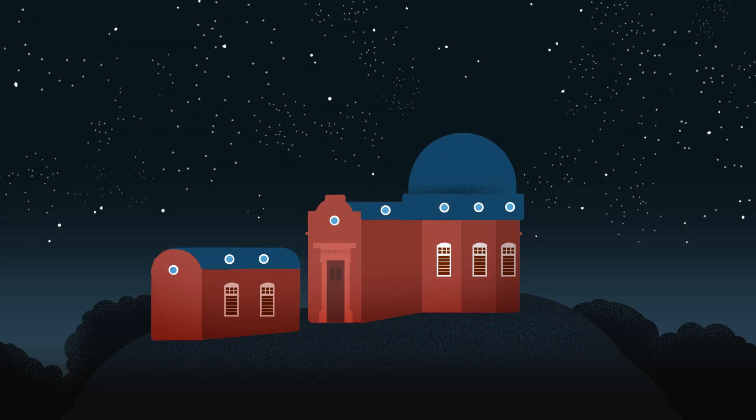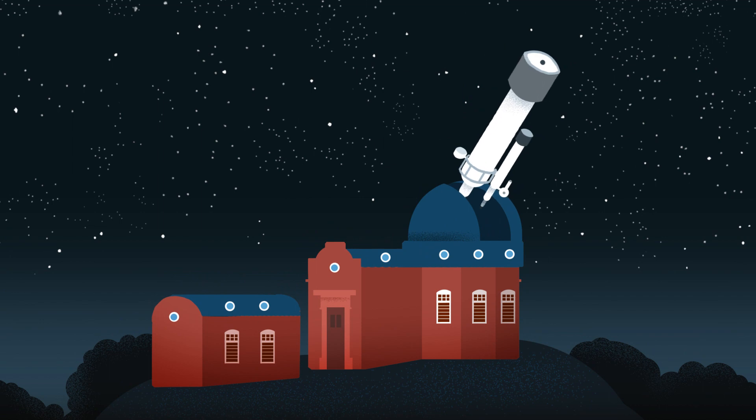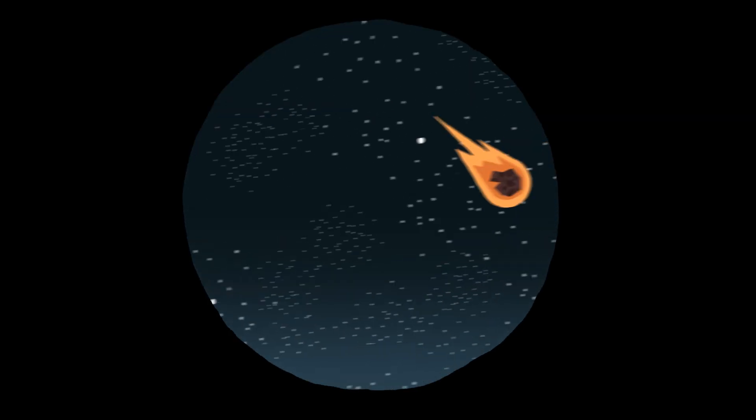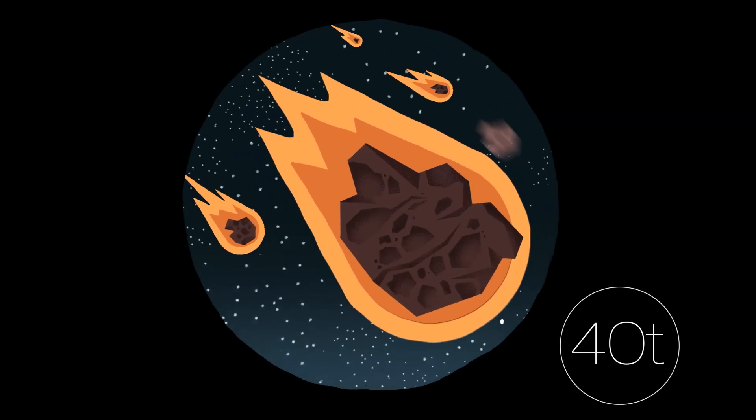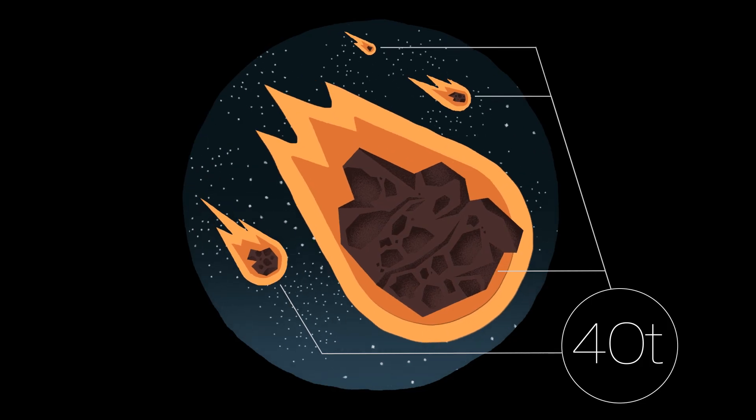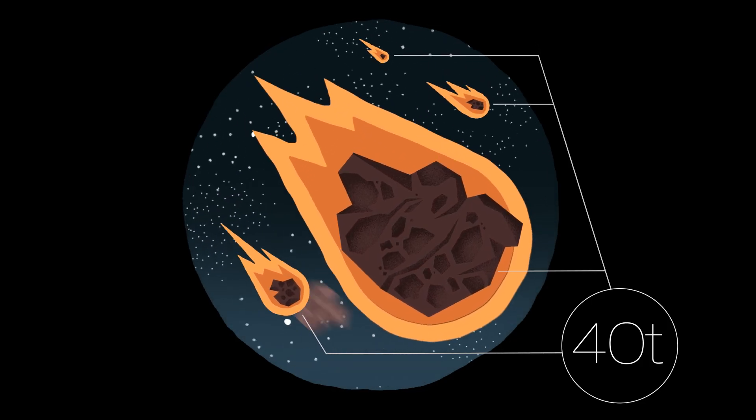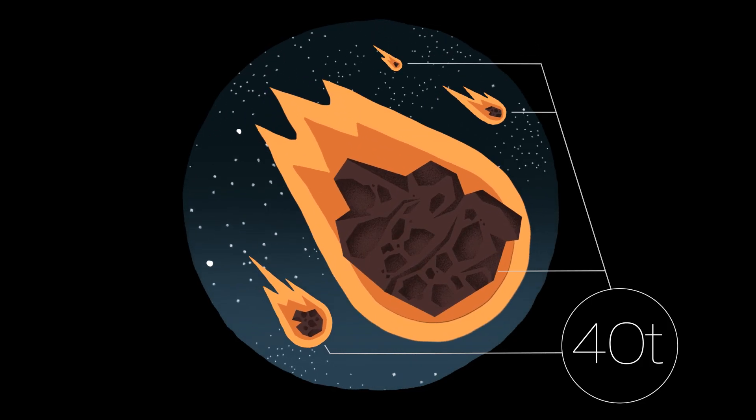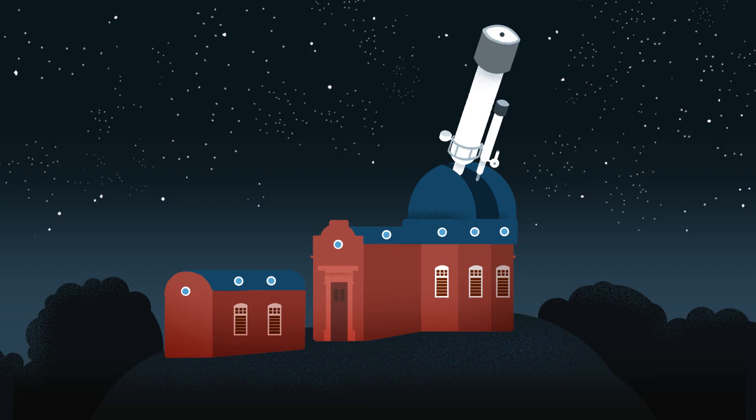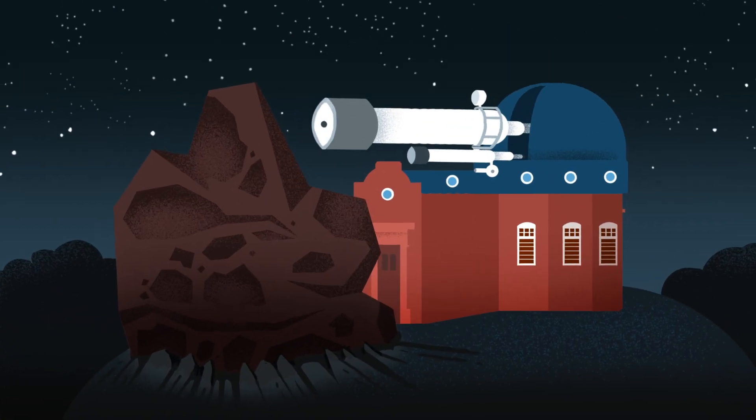In astronomy, most research is done with telescopes, but this isn't always the case. Over 40 tonnes of material falls on the Earth every day, and sometimes the pieces are large enough to survive their fiery journey through the atmosphere and reach the ground. These space rocks, called meteorites, contain the information we need to find out the age of our solar system.